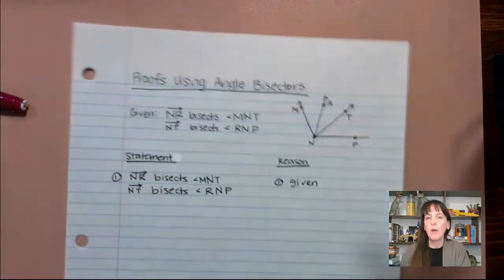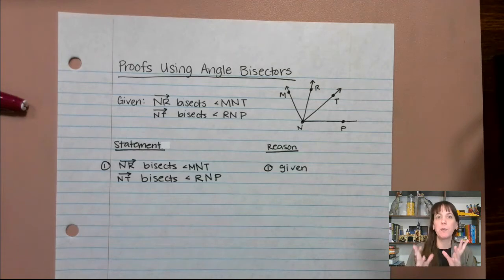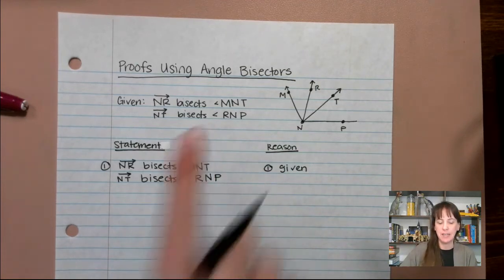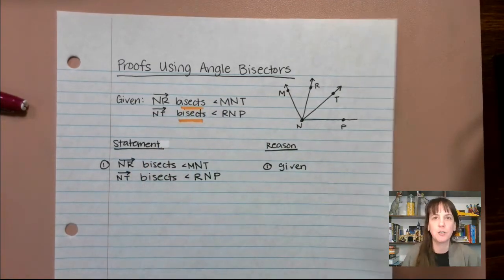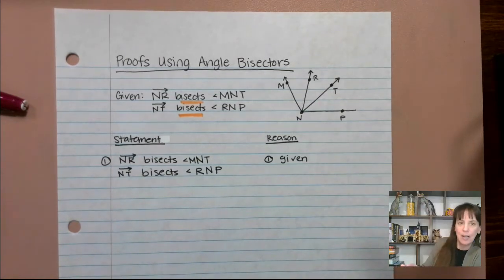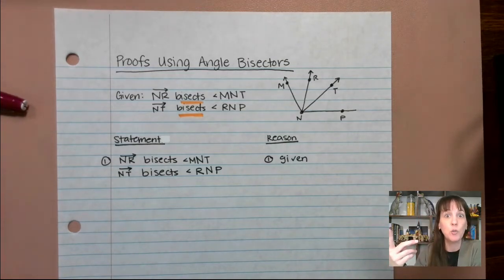Now, I love doing bisectors because when we have these guys, bisect just means that it makes two equal parts. But when you see the word bisect in your given, you know that you have to use the definition of angle bisectors. So the very first thing I do is I list my givens, and then I say, well, I see the word bisect, so I'm going to have to use the definition of bisect. And the definition means that it creates two equal parts.